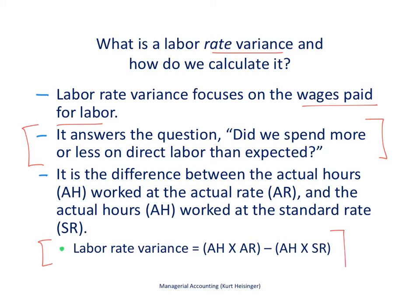The labor rate variance is calculated by taking the actual hours that our direct labor workforce worked times the actual rate per hour — that's our actual cost — and then subtracting from that the actual hours worked multiplied by the standard rate per hour. That is the rate we expected to pay our employees. So we're comparing how much we actually paid our direct labor workforce to what we expected to pay them based on the actual hours they worked.